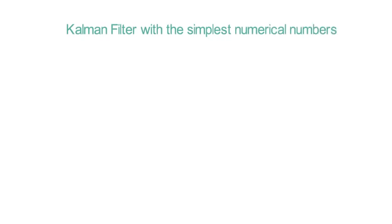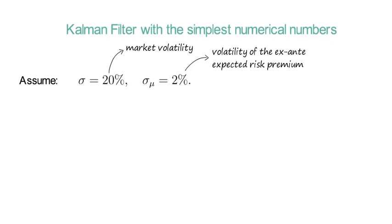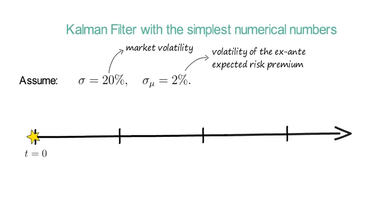So let's go through the Kalman filter with the simplest numerical numbers to see how the filter works. I assume that σ is 20% which coincides with roughly the market volatility. And I assume that the ex-ante expected risk premium has a volatility of 2%.